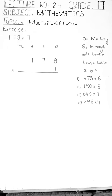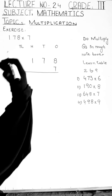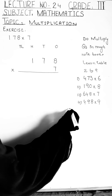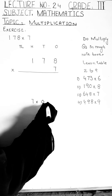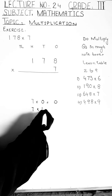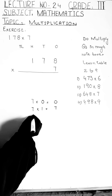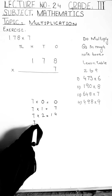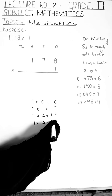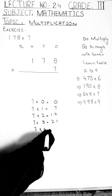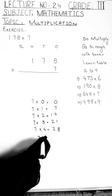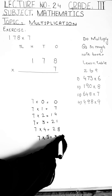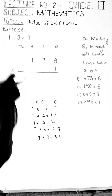Remember, students: if you write the table for yourself, look at the greatest digit in the question. In this question, the greatest digit is eight. So when you write the table, write it just up to eight. Seven zero is zero. Seven ones are seven. Seven twos are fourteen. Seven threes are twenty-one. Seven fours are twenty-eight. Seven fives are thirty-five. The greatest number in this question is eight, so we write the table of seven up to eight.